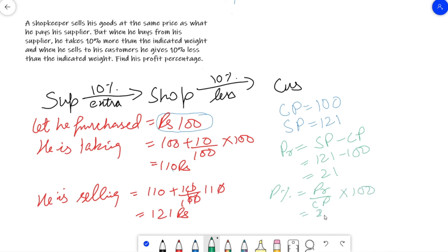So profit is how much? 21 rupees. And cost price is how much? 100 rupees. Profit is how much? 21%, which is the answer.